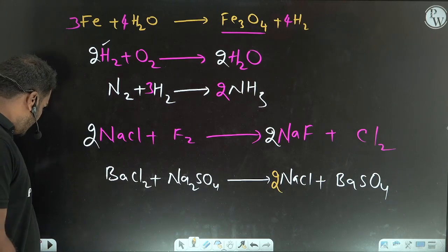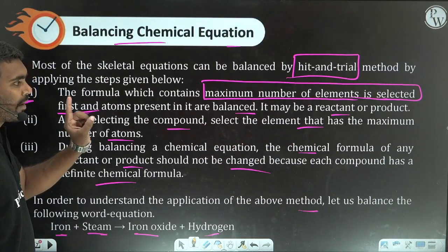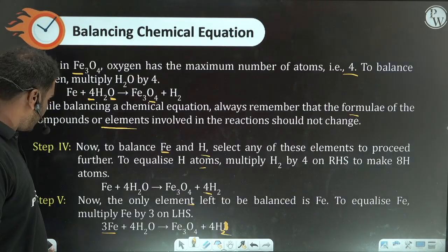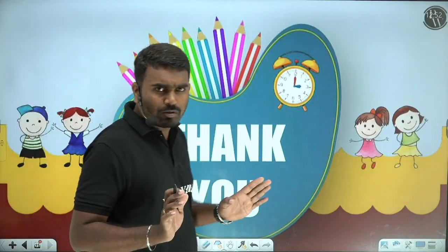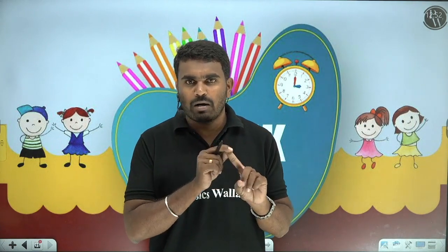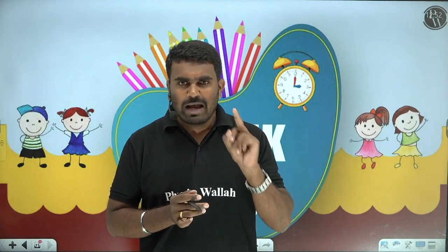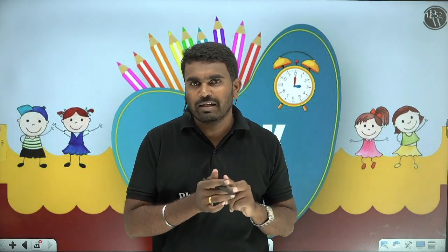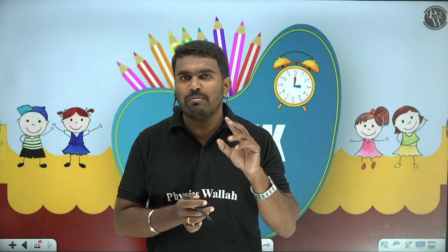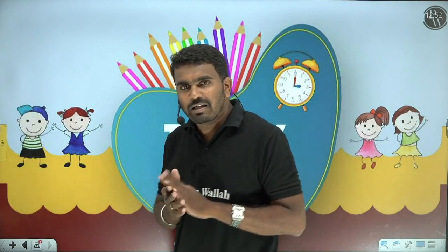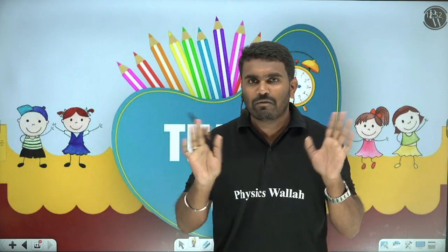So this is a simple technique. To summarize, there are three rules for balancing chemical equations. First, select the compound with the maximum number of elements. Second, within that compound, select the element with the maximum number of atoms and balance it first. Third, do not change the formula of any substance during balancing. These are the techniques to follow for balancing chemical equations. That is all for this topic. I'll come up with another interesting topic. Till then, bye and thank you everyone. Bye bye, see you.